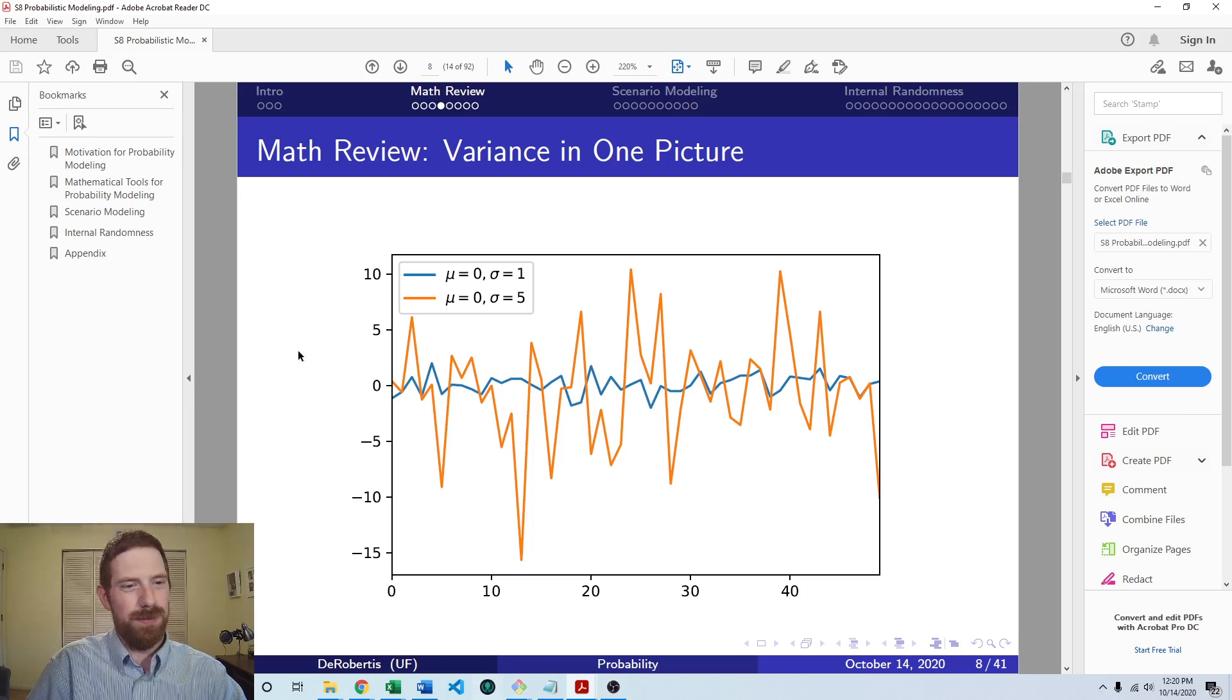The orange line is of course moving up and down a lot more. But it's still basically centered around zero. So where it's centered, that's the average or expected value, that's the mean. And then the variance is how much it moves around that mean. So the orange line is moving a lot around it, it has a high variance, the blue line is moving a smaller amount around it, it has a small variance.